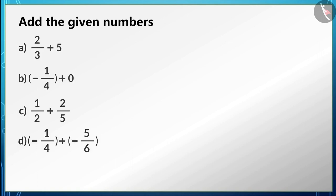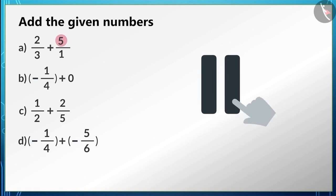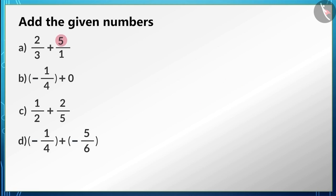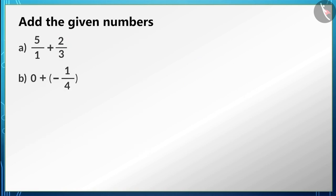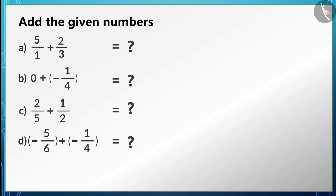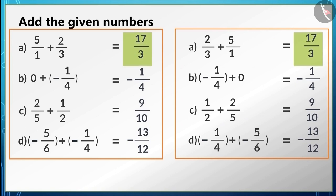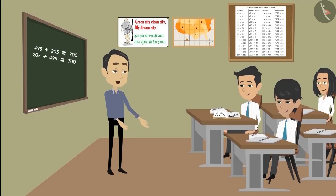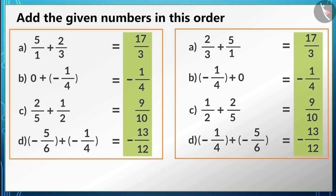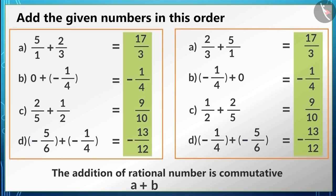Now add the numbers shown on screen in the given order. Note that the number 5 in the first question can also be written as 5/1. Pause the video and solve these questions. After solving, change the order of the numbers and add them again — the answers are the same. Therefore, the addition of rational numbers is commutative: for any two rational numbers a and b, a + b = b + a.